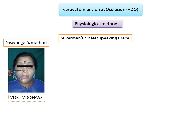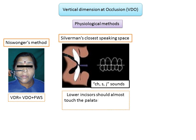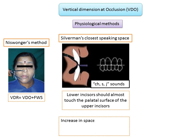Another common method is Silverman's closest speaking space. When sounds like 'S', 'SH', or 'J' are pronounced, the upper and lower teeth reach their closest relation without contact. This minimal space is called Silverman's closest speaking space. Ideally, the lower incisor should almost touch the palatal surface of the upper incisor. An increase in the freeway space between upper and lower incisors indicates an inadequate VDO, while a decrease in the closest speaking space or contact of incisal edges during speech indicates an excessive VDO.